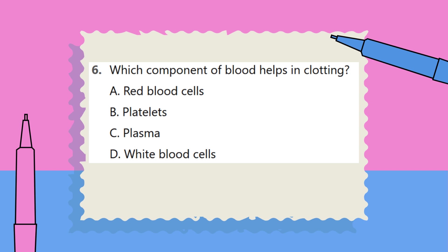Question 6. Which component of blood helps in clotting? A. Red blood cells. B. Platelets. C. Plasma. D. White blood cells.